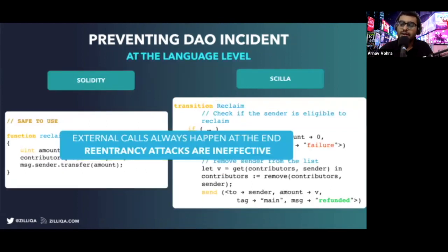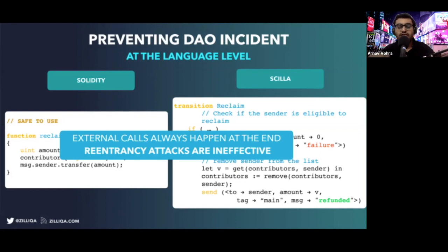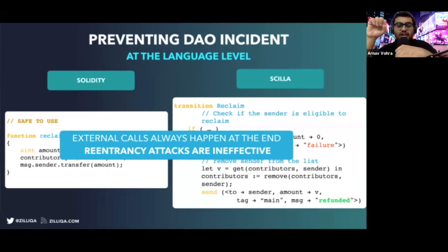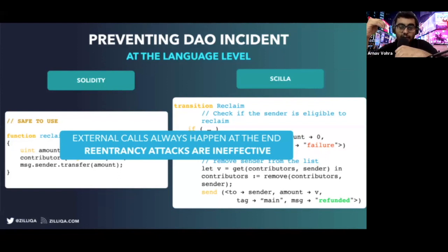How do we mitigate this issue in Scylla? In Scylla, all external calls to contracts or any other address happen at the end. If you are writing a function — which in Scylla we call a transition — all external calls happen such that first you have the logic, and then you use the send keyword to actually do external calls. This DAO hack would actually have been prevented in Scylla at the language level itself, as you can see in the Scylla code snippet on the right side.